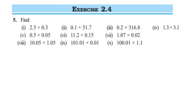Hey everyone, here I am doing Exercise 2.4, fifth question. The chapter is Fractions and Decimals of Class 7, and this whole exercise is all about multiplication. We are solving the fifth question. If you have solved the previous questions 1 to 4, we have learned how to multiply with 10, 100, and 1000, and how to multiply decimal numbers with whole numbers. Now, this last question is all about multiplying a decimal number with a decimal number. We have around 10 questions to solve.